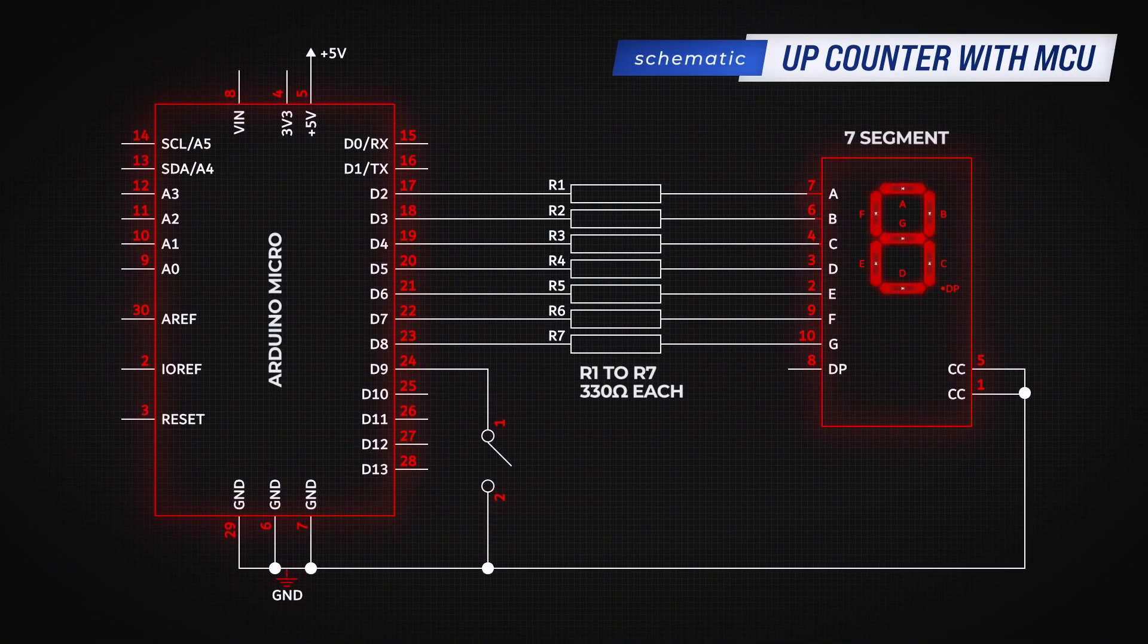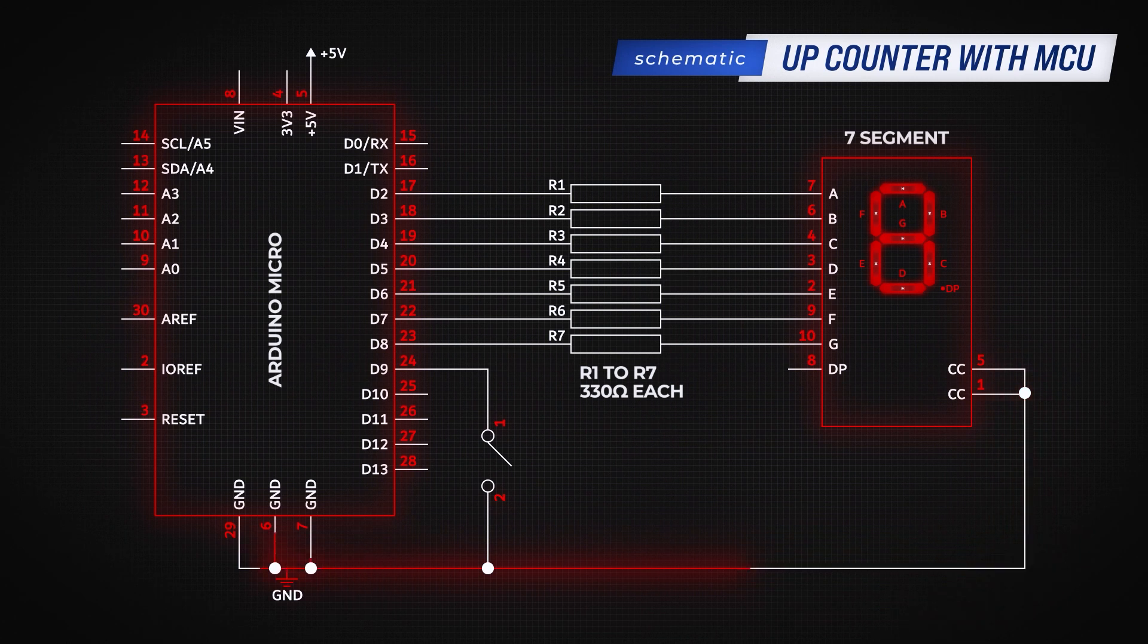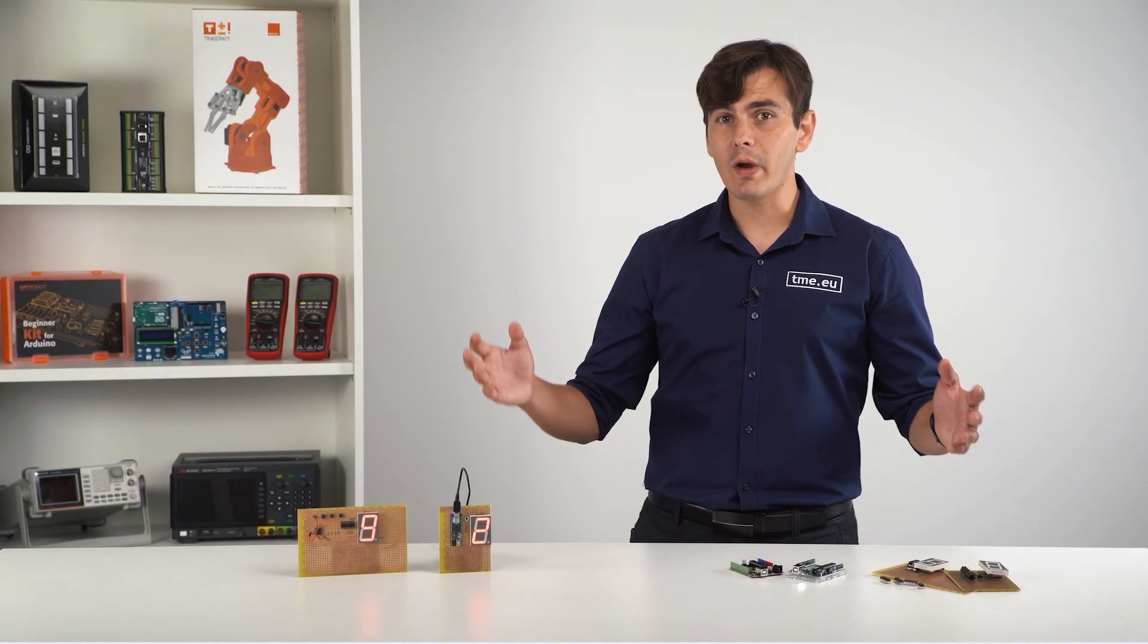The circuit is quite simple. We connect each anode connection to a resistor and from there to a certain MCU pin. While two common cathode pins are tied to the ground. Connection to the digital pins need to be exactly as shown in the schematics, otherwise writing the code will be at least three times harder.